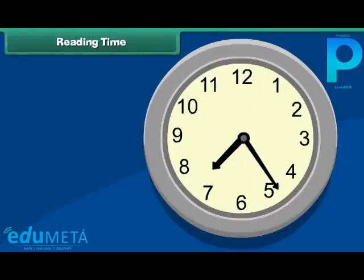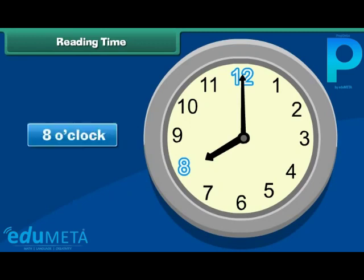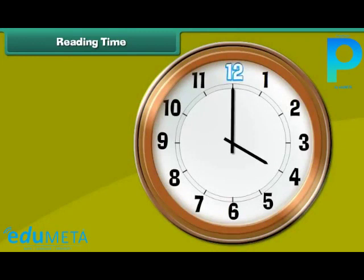Reading time. Look at this clock. Note the positions of the minute and hour hands on its face. The minute hand is pointing to 12 and the hour hand is pointing to 8. It means the time is 8 o'clock. Look at another clock. Its minute hand is pointing to 12 and the hour hand is pointing to 4. It means the time is 4 o'clock.